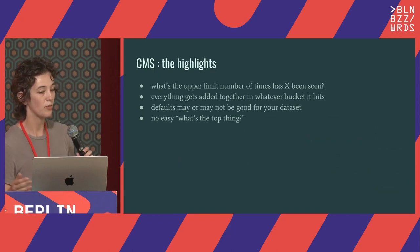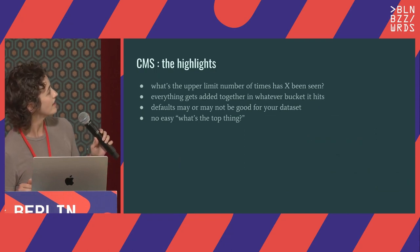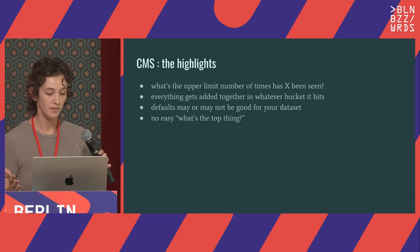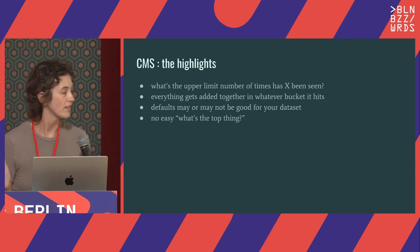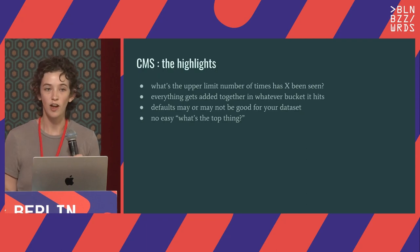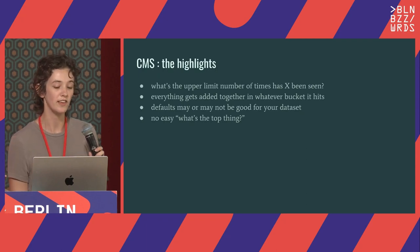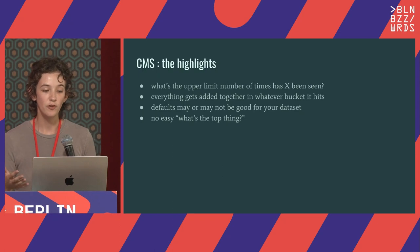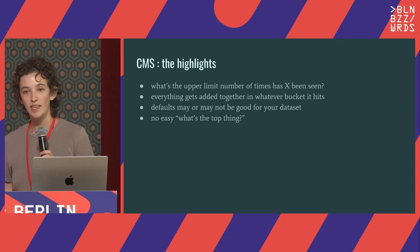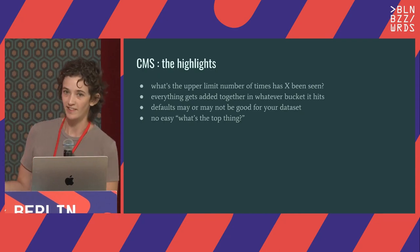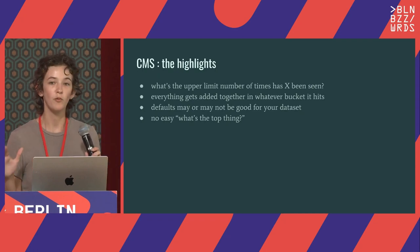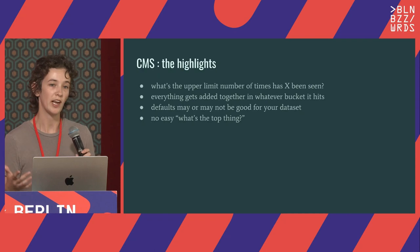The highlights: we get the upper limit of the number of times that X has been seen. Everything gets added together in whatever bucket it hits. The defaults may or may not be good for your data set — that's another one of those 'how many hash functions do you want, what's the length of your column, how much space can you actually devote to this?' In general, the more space you want to use, the more accurate you can be, but then you start to defeat the point of a probabilistic data structure.